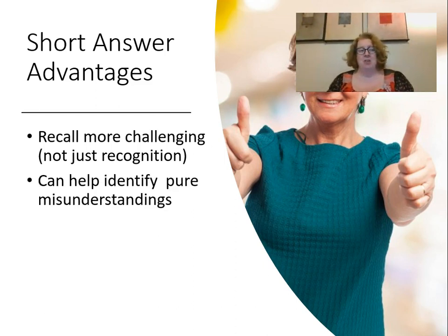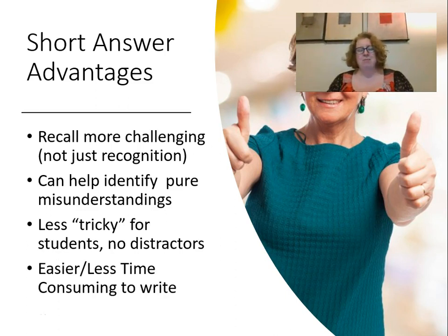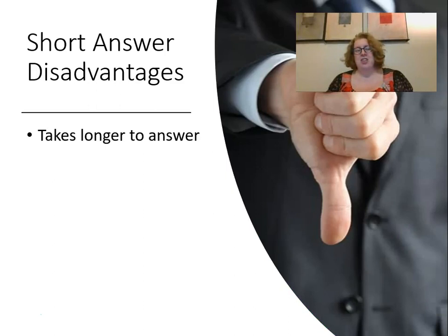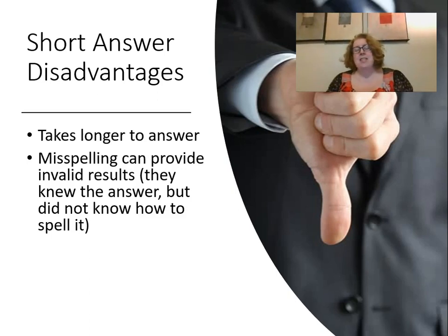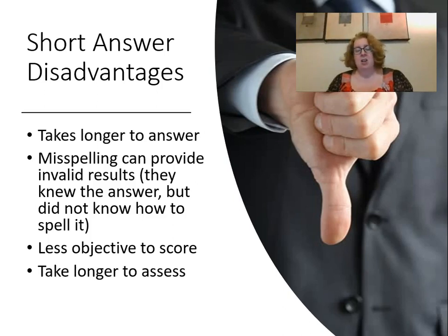Constructed response items can help identify pure misunderstandings, and they're less tricky because there are no distractors — it's a more pure measure of what students know. They're also a little easier and less time-consuming to write because you don't have to come up with distractors. Some disadvantages: they do take longer for students to answer than just circling a correct answer, and misspelling can provide invalid results — a student may know the answer but not be able to spell it. They're also less objective to score than selected-response items, though still more objective than essay questions.